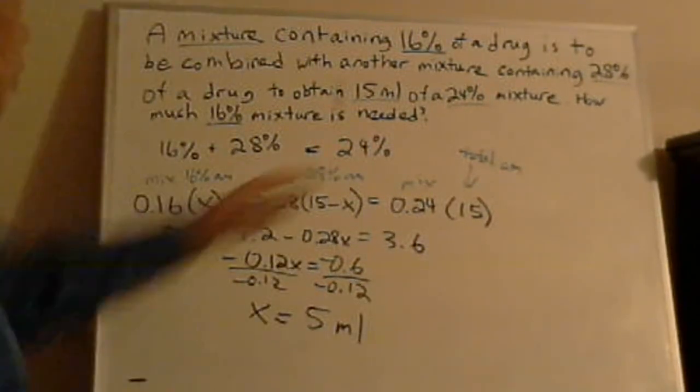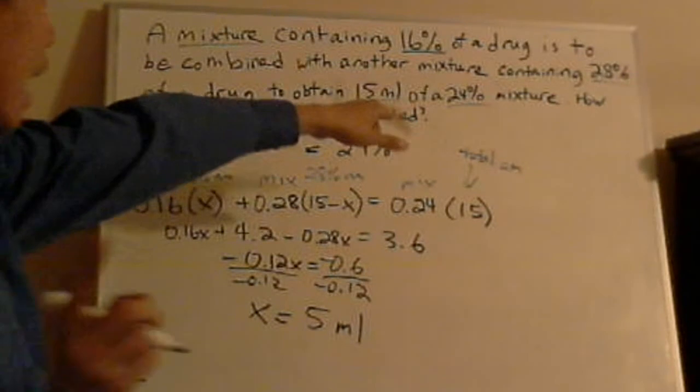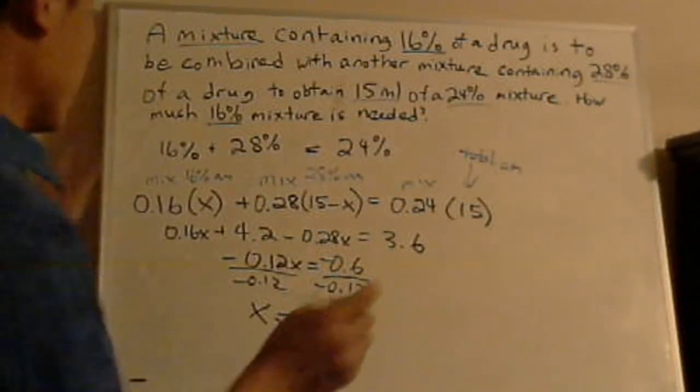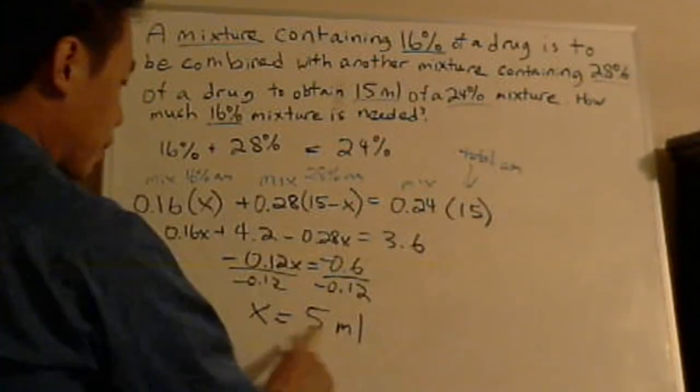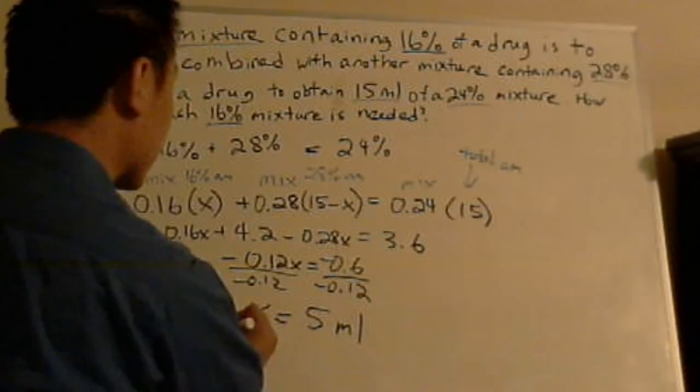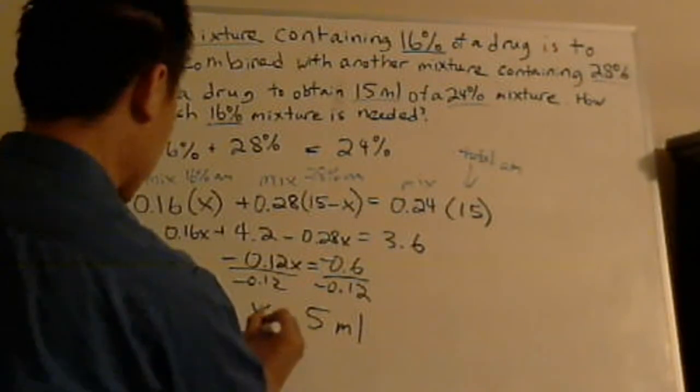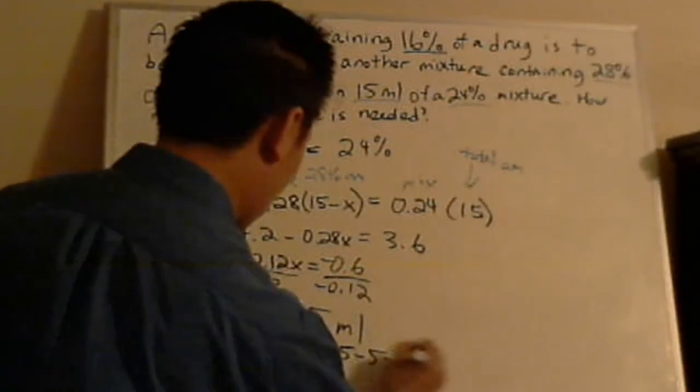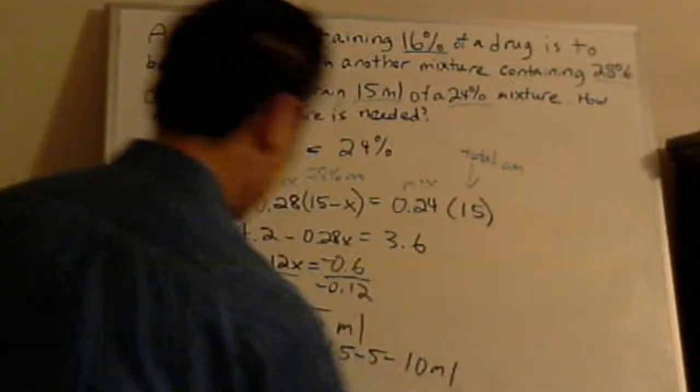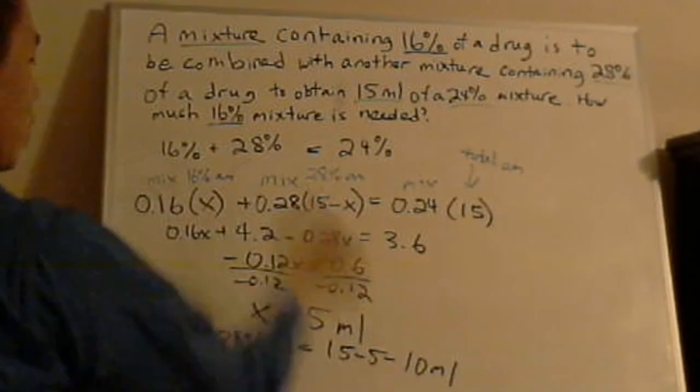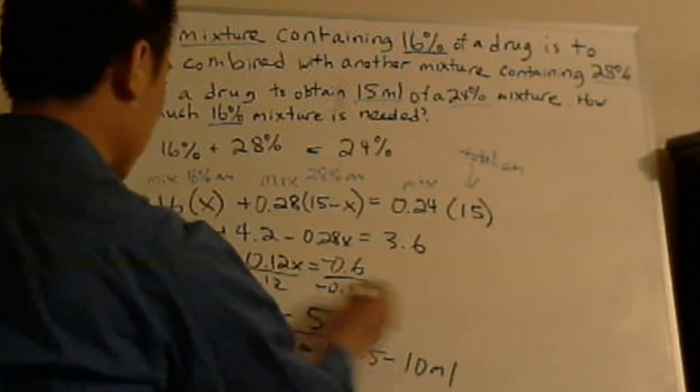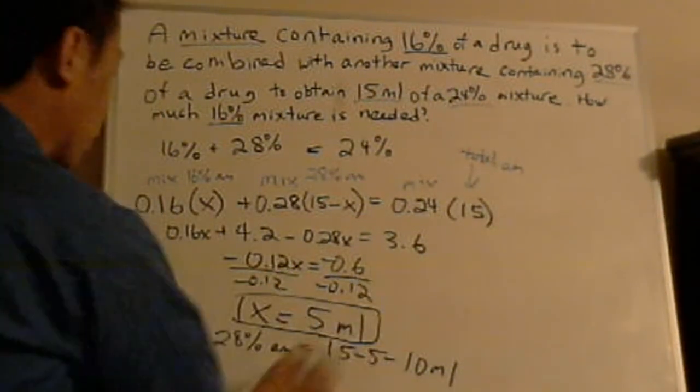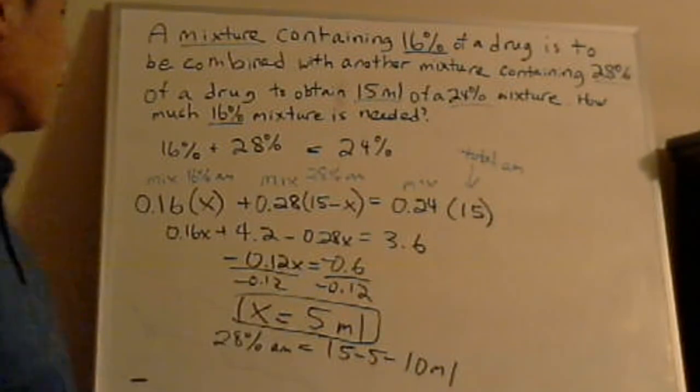And if you ask how many of the 28% mixture, it just says, what, 15 milliliters? So you subtract that. And you say the 28% mix amount is equal to 15 minus 5 for 10 milliliters. But it's only asking for the 16% mixture. So this is the answer. But the question does ask for the 20% mixture is 10 milliliters, right? But right now, we need to do the 5 milliliters. So I hope that clears it up. If you have any questions, please ask me.